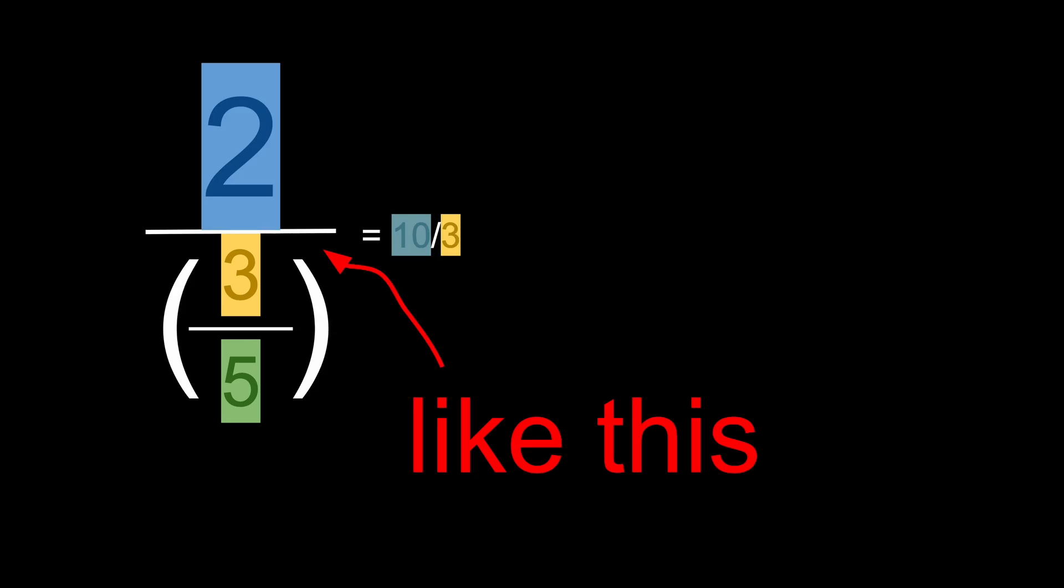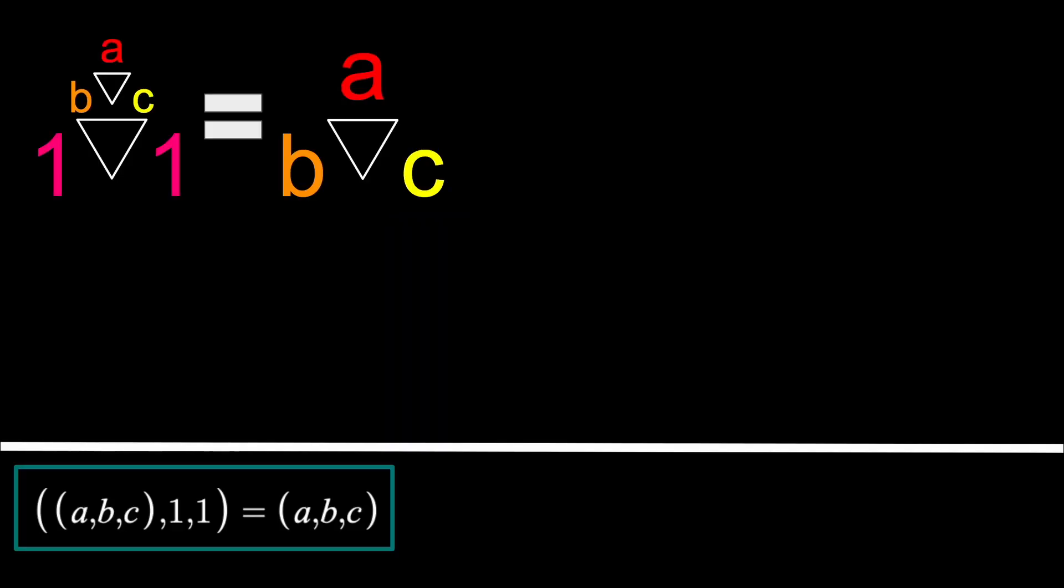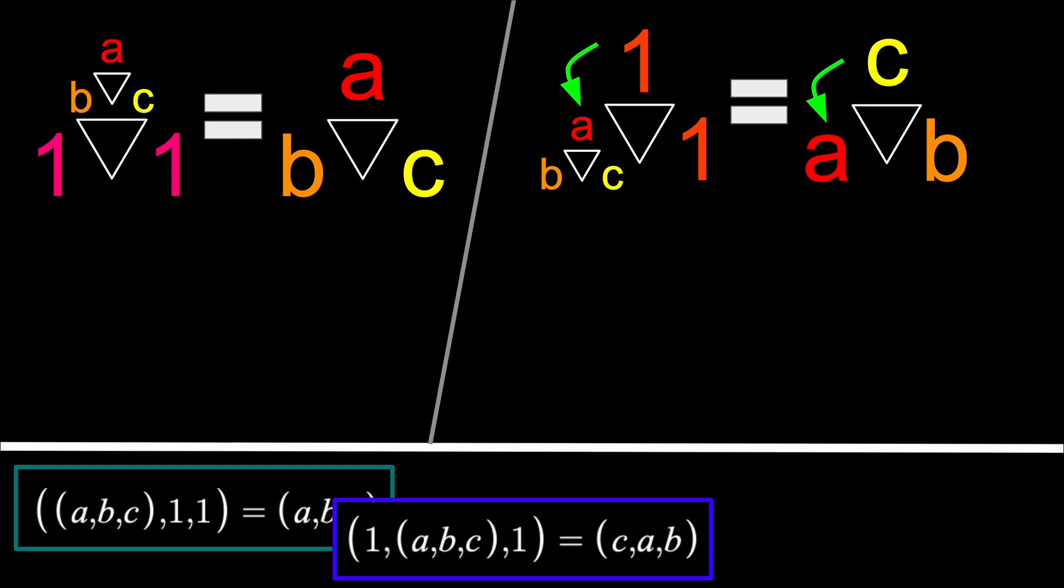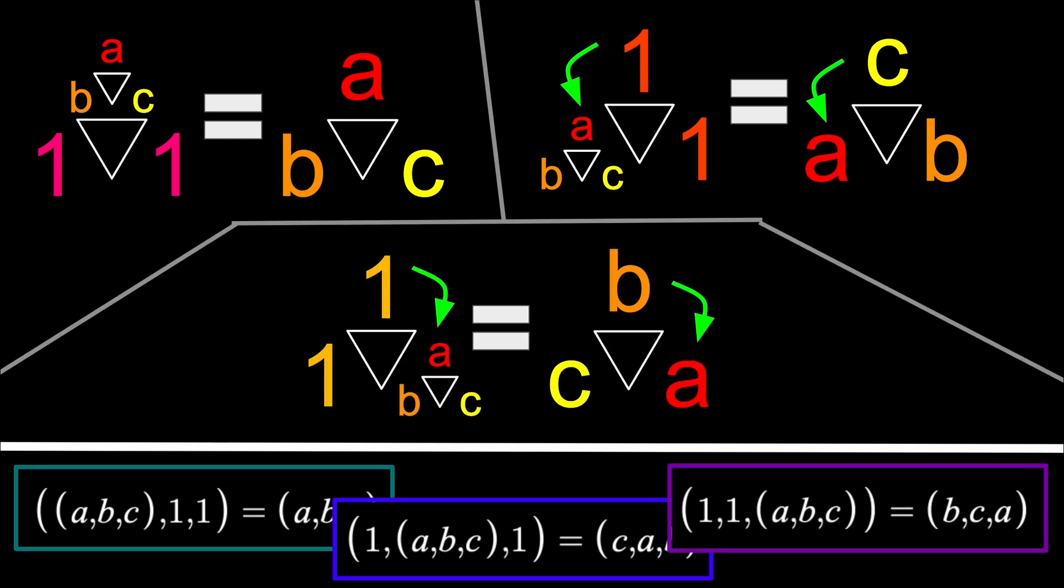So you know how you can have a fraction inside of another fraction? Well, putting a dirational in the numerator doesn't do anything. Putting it in the left denominator rotates the whole thing counterclockwise, and putting it in the right denominator rotates it clockwise. Even if you're about to click off this video, you gotta admit, that looks cool as hell.